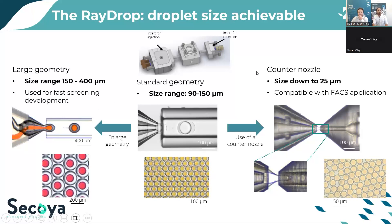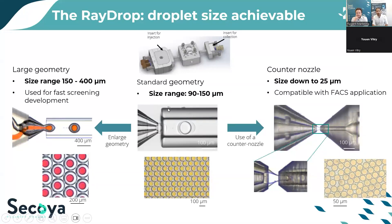For applications requiring smaller double emulsions — such as encapsulating cells or bacteria for FACS sorting — the double emulsion must be smaller than the FACS nozzle to avoid breakage. For this, we developed another design called the counter nozzle: the same double nozzle inlet is used, but at the outlet, instead of a collection capillary, a counter nozzle increases local shear stress, generating smaller double emulsions at a higher generation frequency. This allows targeting double emulsions from 25 micrometers in diameter.